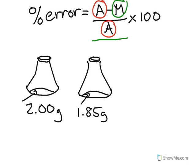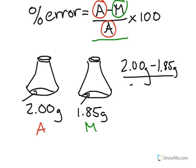Now, what would be the percent error for your experiment? Well, you'd plug all those values in. Again, this would be A, and this would be M. So let's plug those values in. So 2.00 grams minus 1.85 divided by 2 times 100.